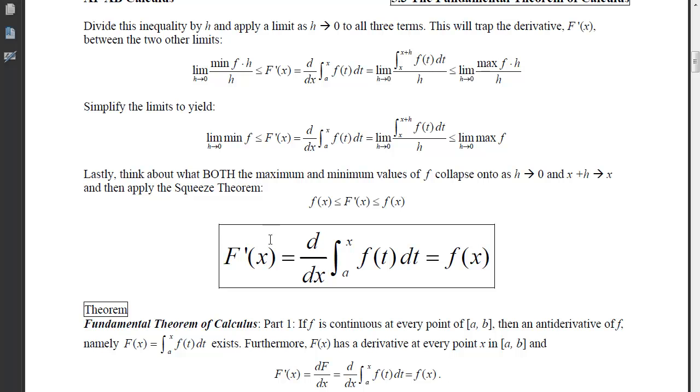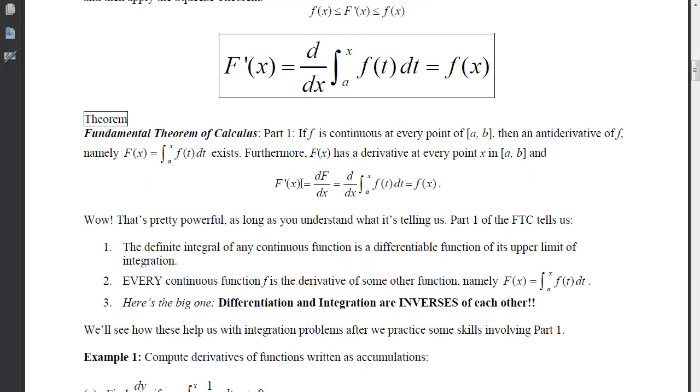What that means for us is that big F's derivative will equal little f. That is our Fundamental Theorem of Calculus, Part 1. It tells us if little f is continuous at every point on the interval from a to b, closed, then an anti-derivative of little f, namely capital F, which was that accumulation from a to x on f, is going to exist.